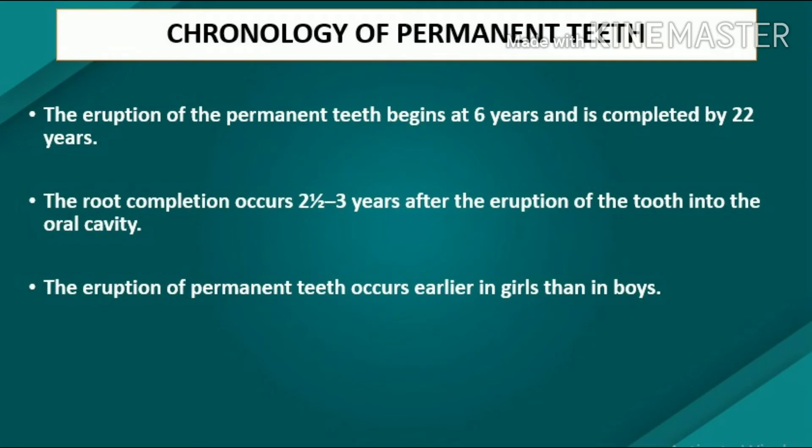Chronology of permanent teeth: the eruption of permanent teeth begins at six years and is completed by 22 years. Root completion occurs two and a half to three years after the eruption of the tooth into the oral cavity. The eruption of permanent teeth occurs earlier in girls than in boys.